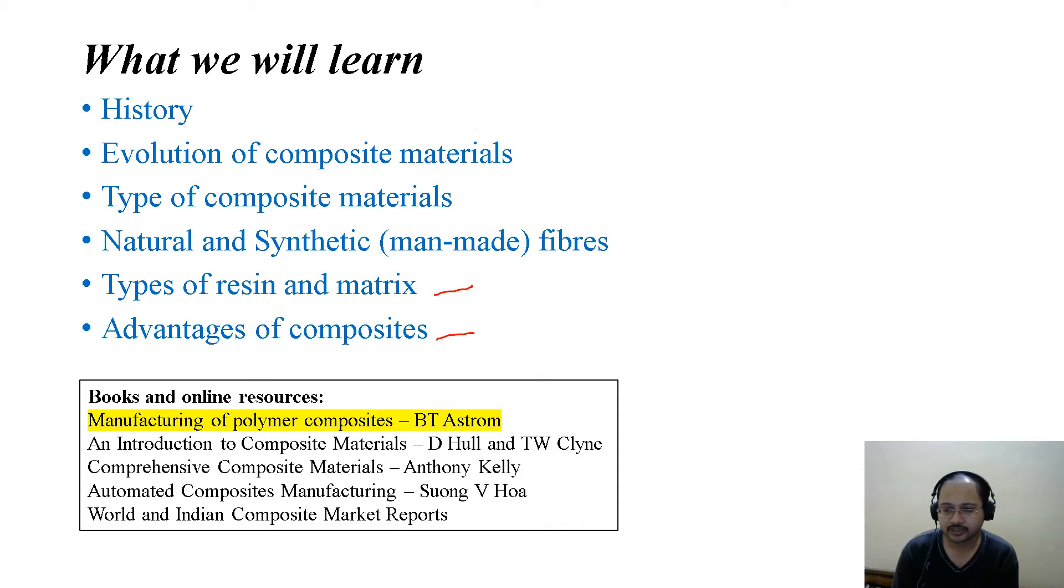There are some books and online resources which I would like to recommend to you, of which this is the most important one: Manufacturing of Polymer Composites by BT Astrom, which has been followed in this video lecture series. An Introduction to Composite Materials by D. Hull and T. W. Clyne, Comprehensive Composite Materials by Anthony Kelly, Automated Composite Manufacturing edited by Hoa, and you can find reports on world and Indian composite market reports which are available online.